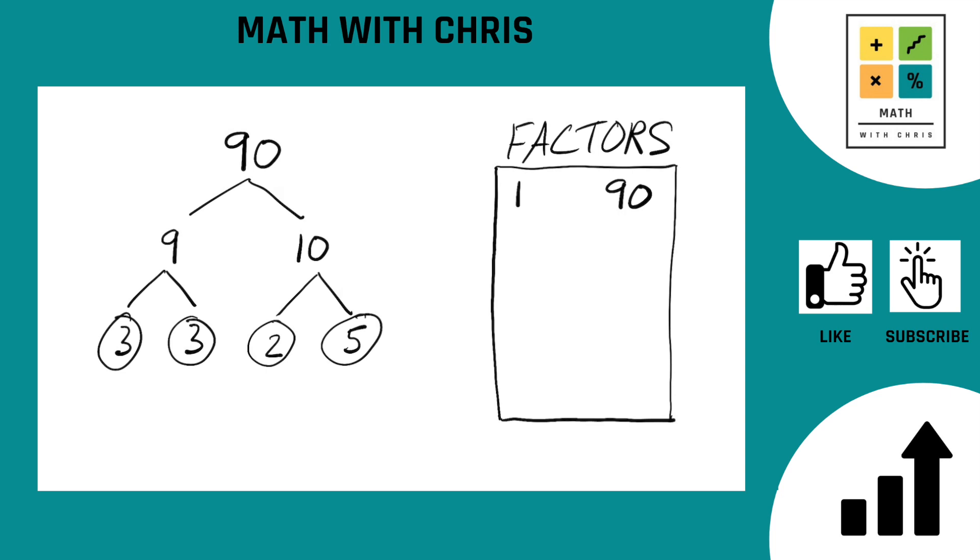And our tree is done, nice and clean here. Any path you take down, any branch ends in a circled prime number no matter which direction you go. That's our goal and we have achieved the goal. So, we're done with the factor tree.